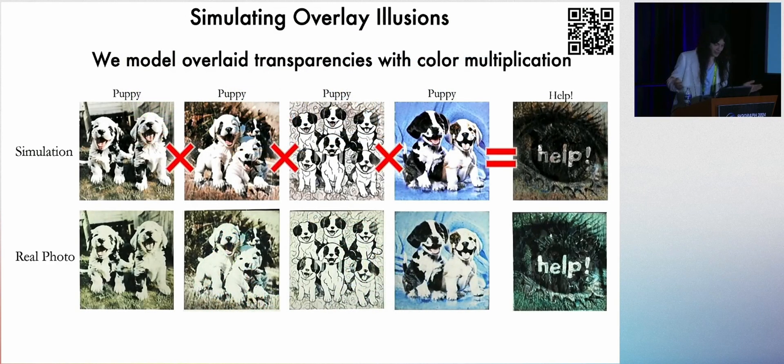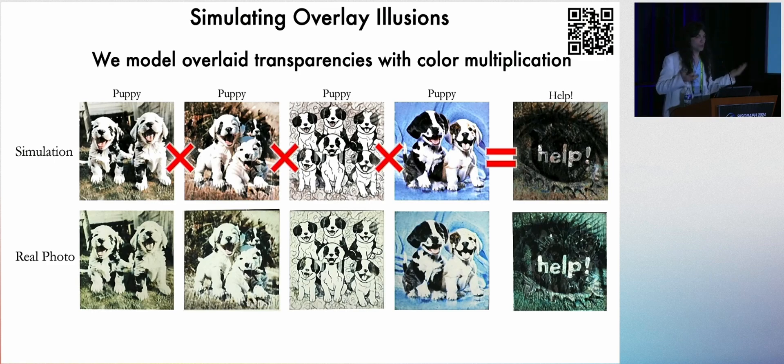To simulate these overlays, we actually use multiplication channel-wise, like Photoshop's multiply blend mode. And we find this approximates real photos pretty well. I mean, it's not perfect, but it's good enough.